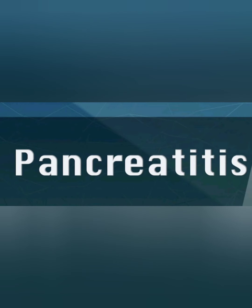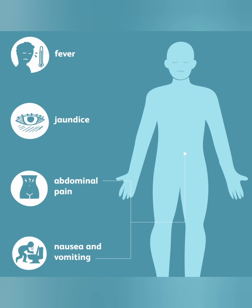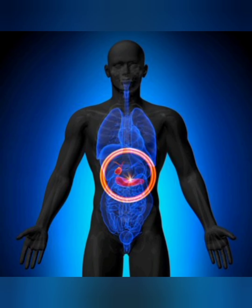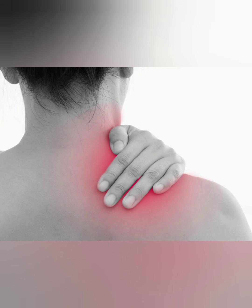5. Pancreatitis. Pancreatitis causes abdominal pain. Symptoms of gallbladder stone: 1. Sudden and rapidly intensifying pain in the upper right portion of your abdomen. 2. Pain in the center of your abdomen just below your breastbone. 3. Pain in your right shoulder.